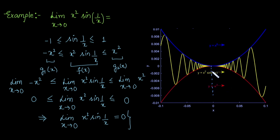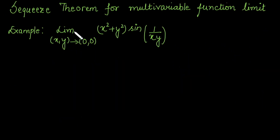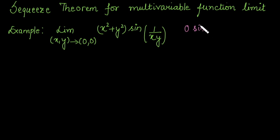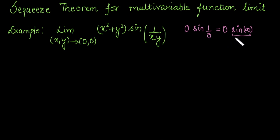Now we will extend this concept to a multivariable function. For the example: find the limit of (x² + y²) sin(1/(xy)) as (x, y) approaches (0, 0). When we substitute x = 0, y = 0 directly, we get 0 · sin(1/0), and since 1/0 is infinity, sin(infinity) is not defined. Based on observation we expect the answer to be 0, but we need to confirm this using the squeeze theorem.